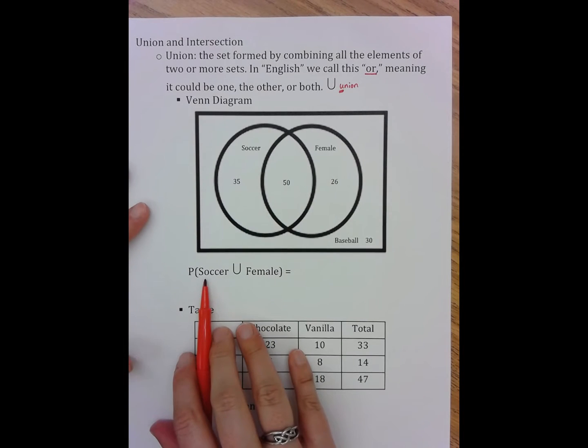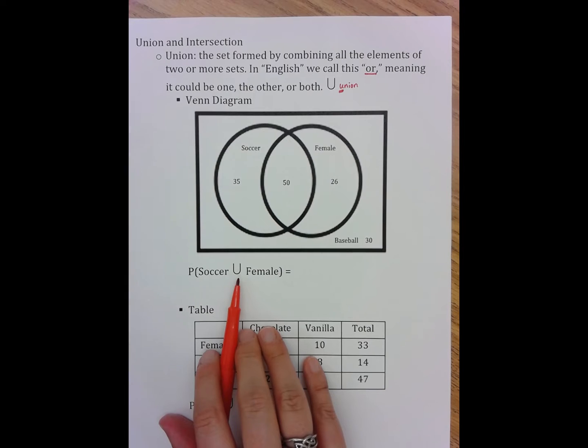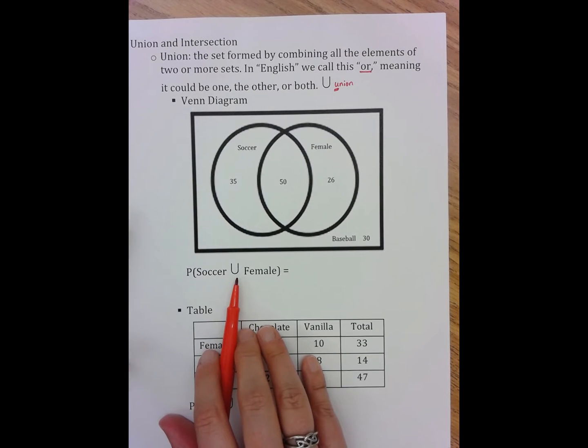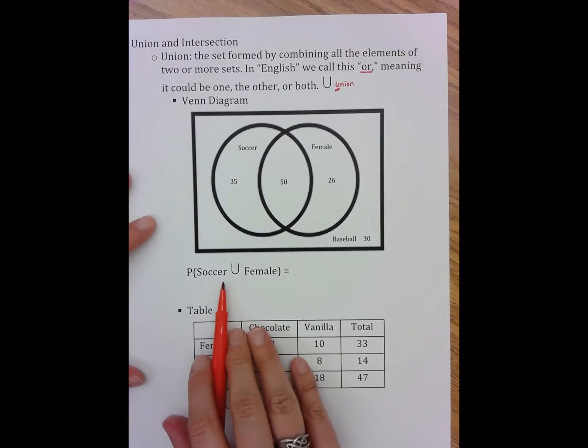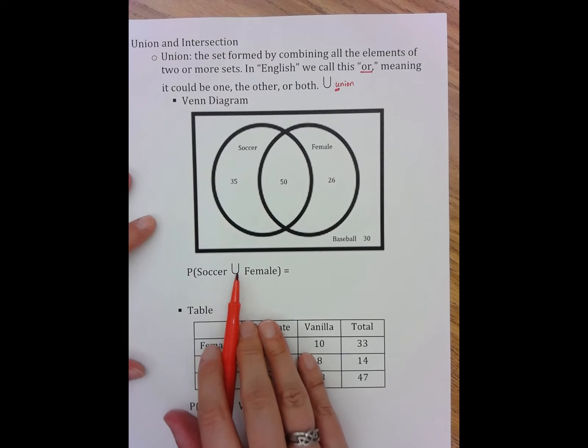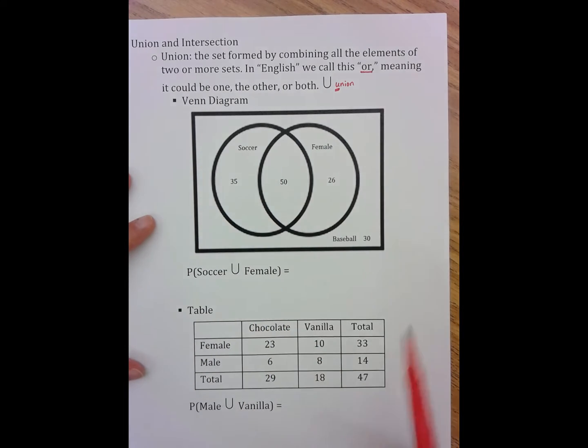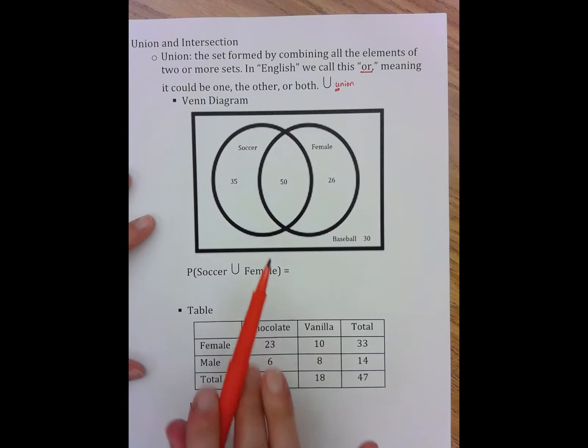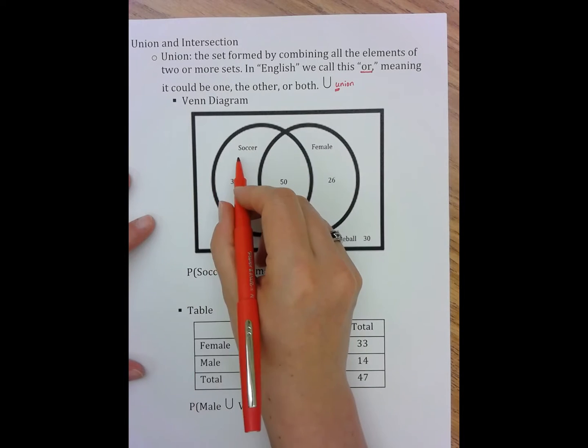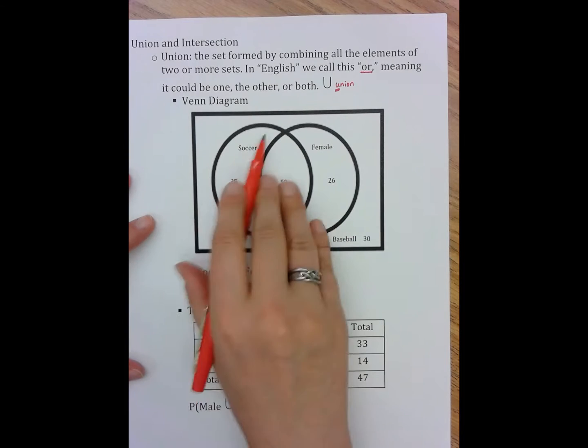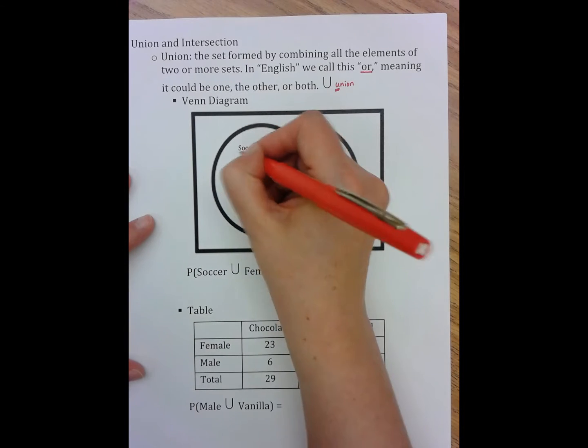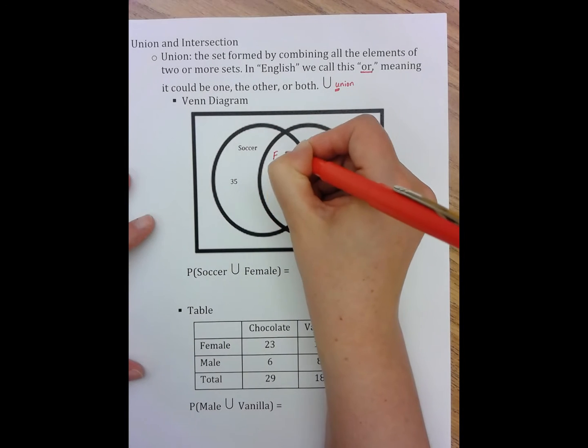So when I'm given a probability like soccer union female, I'm basically asking for anyone who plays soccer or anyone who is female. So it might be helpful to label a little bit more here. If this is female and this is soccer,